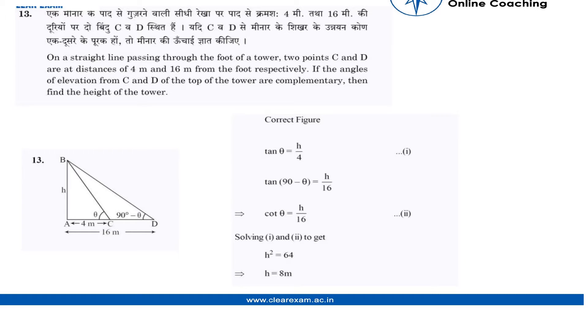Students, we will be discussing this question and its solution. The question says: on a straight line passing through the foot of a tower, two points C and D are at distances 4 meter and 16 meter from the foot respectively. So here is the tower AB, and from its foot, that is this point, there are two points C and D located at 4 meter and 16 meter respectively.